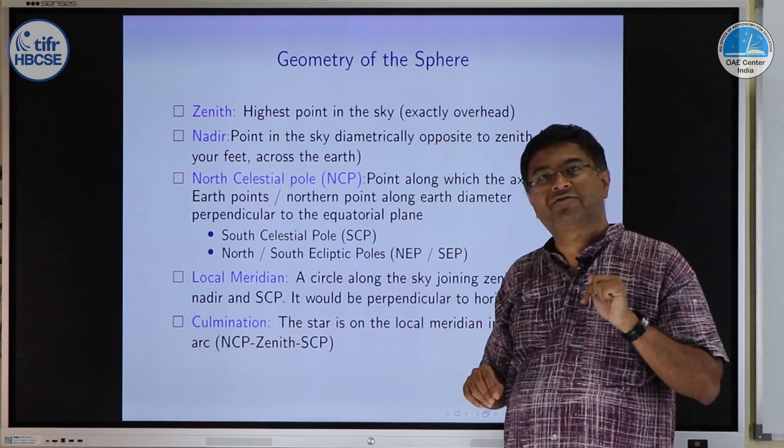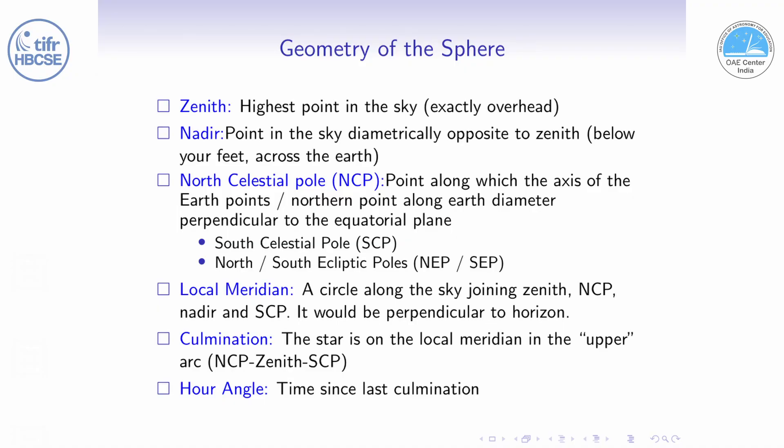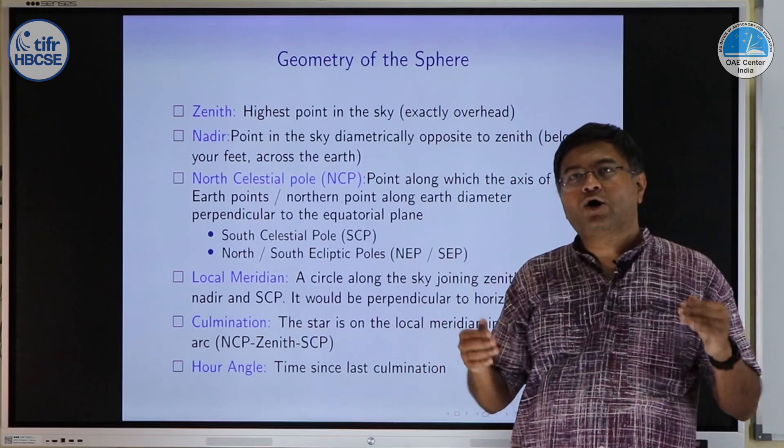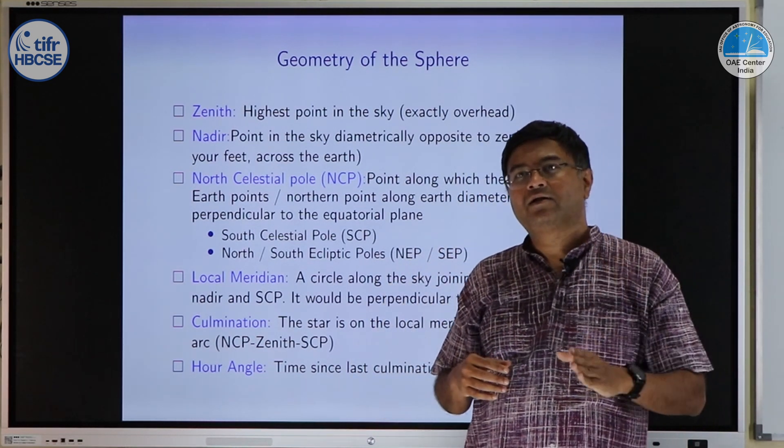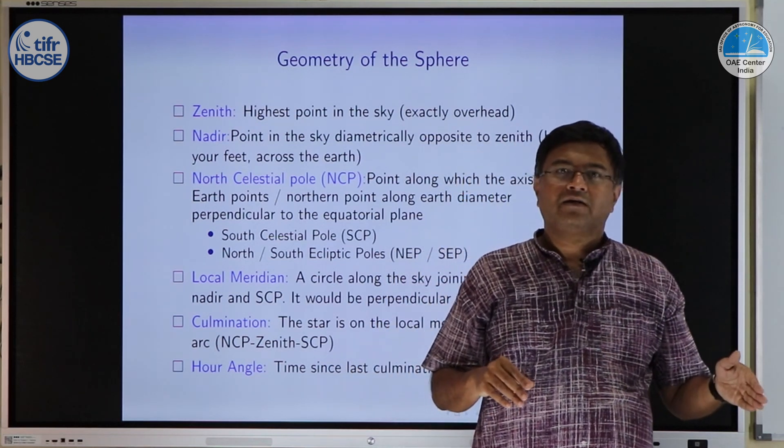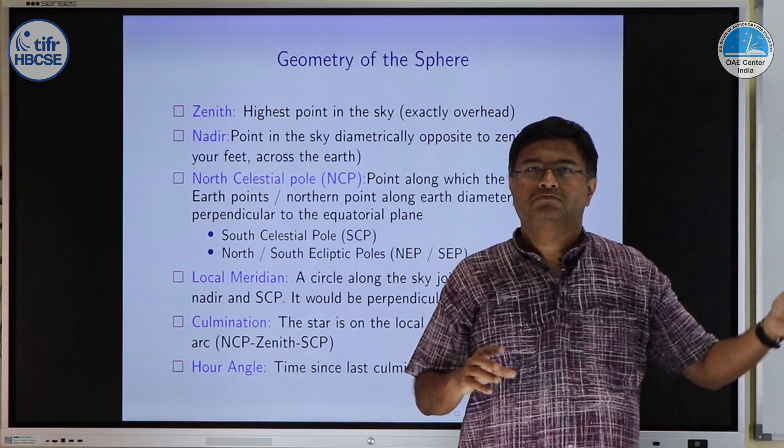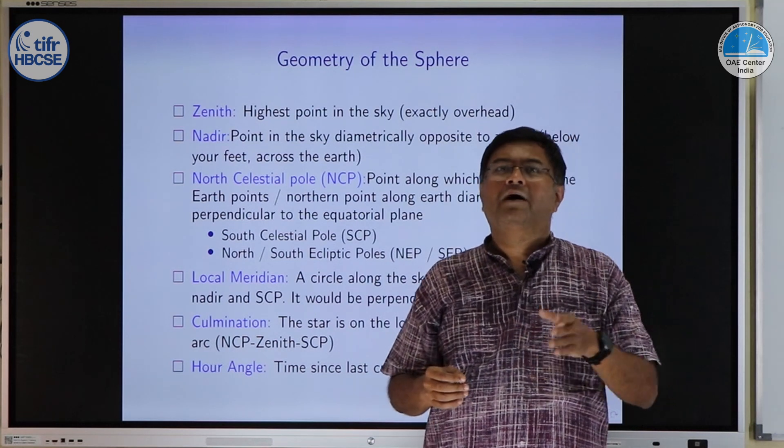Since the meridian is defined locally, the culmination is also a local event. And then we define something called hour angle which is very commonly used in positional astronomy. Hour angle just tells you, although it is angle, it gives you time since the last culmination of that star. If I say hour angle of the sun is 2 hours, it means that sun was at the local meridian 2 hours back. If I say hour angle of sun is minus 3 hours or 21 hours, then that means sun will come to meridian after 3 more hours.